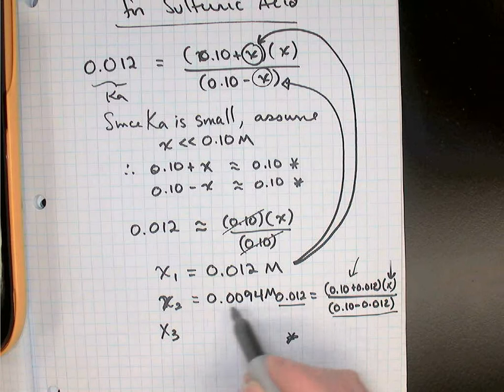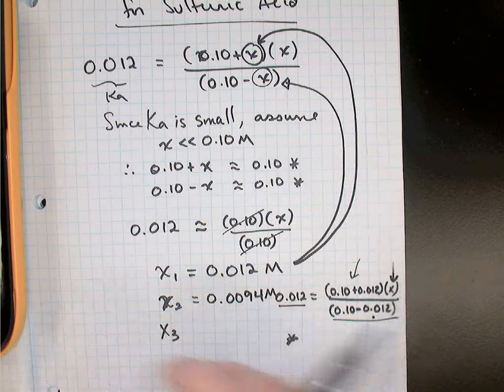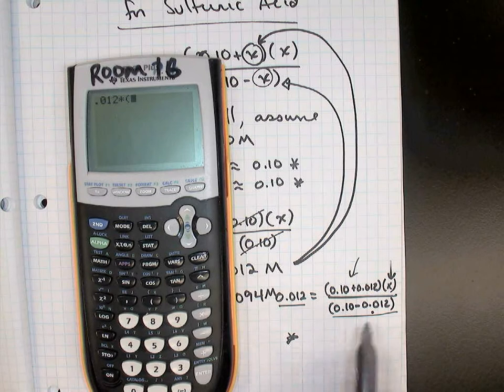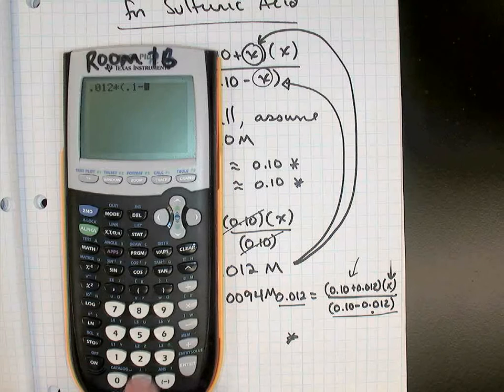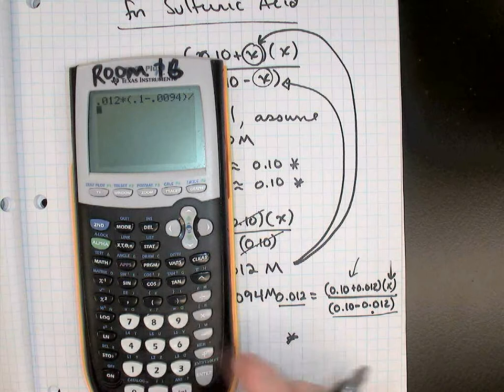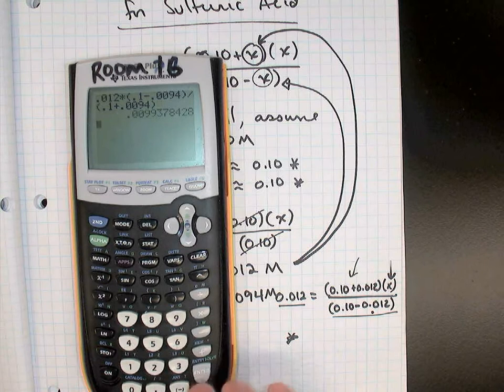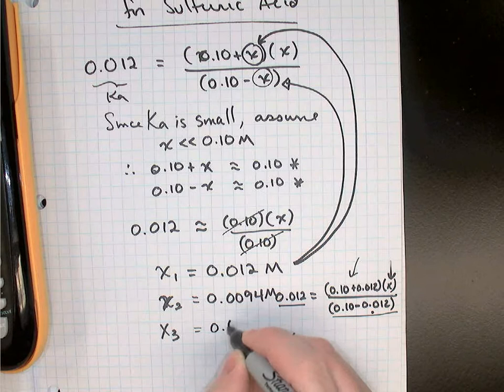We're going to do a third approximation the same way. We're going to put 0.0094 into the original equation on the top and on the bottom. This time, rather than write it out, I'll just do it on my calculator. So 0.012, the Ka, times open the bracket on the denominator, we'd have 0.1 take away our second answer, 0.0094, close the bracket, divided by the bracket on top, so 0.1 plus 0.0094, and make sure you're using brackets appropriately there. Equals, and I get 0.0099. So notice our answer is still changing, but it's narrowing in on something.